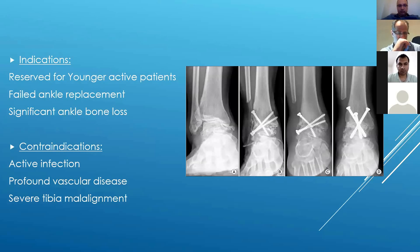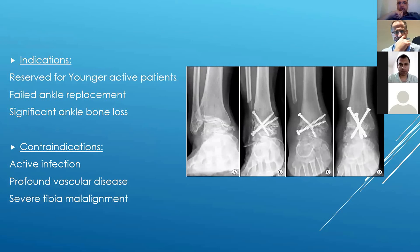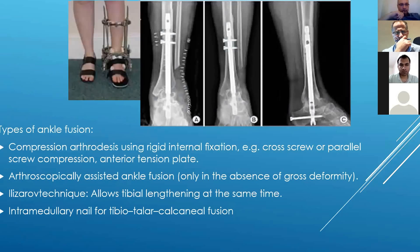Contraindications to ankle arthrodesis: active infection — you cannot do it; profound vascular disease — the ankle won't unite and you risk gangrene and amputation, so refer to vascular surgeons; and severe tibial malalignment — in that case you need to address tibial osteotomies to align the lower leg first before tackling the ankle. Types of ankle fusion include open ankle fusion and arthroscopically assisted ankle fusion. For rigid internal fixation you can use cross screws, parallel screw compression, or an anterior tension plate.